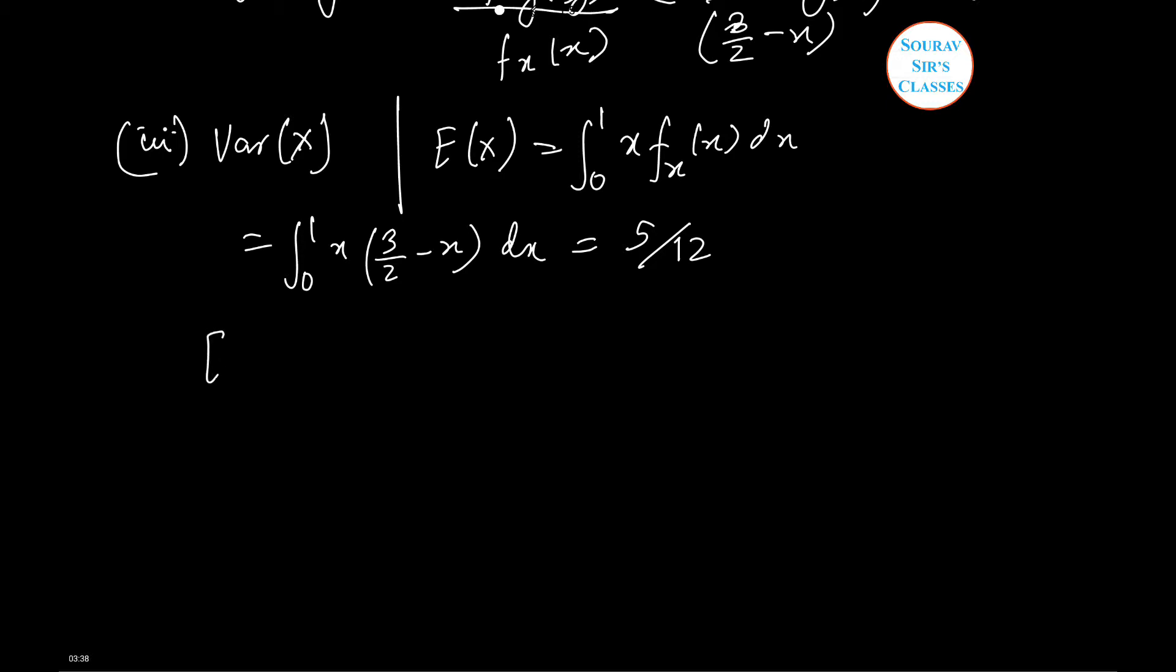Now let us find expectation x square which is equals to 0 to 1 x square 3 by 2 minus x dx which is equal to mod of 3 by 6 x cube minus x to power 4 by 4, 0 to 1 which is equals to 1 by 4.